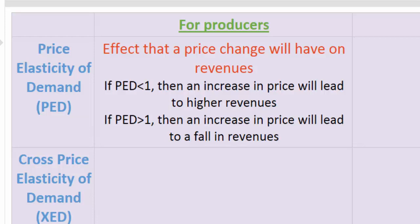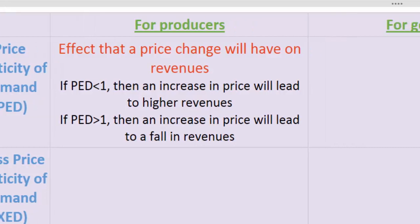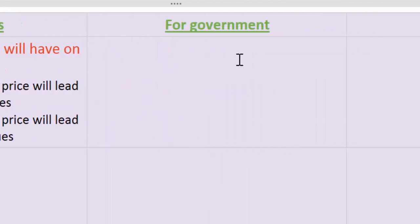If demand is elastic, then a decrease in price could lead to an increase in total revenues. However, if demand for their goods is inelastic, then a price cut will cause a firm's revenues to fall. What about the government? Government might need to understand the elasticity of demand for different goods as well if government is considering implementing taxes or subsidies on the production of a good.